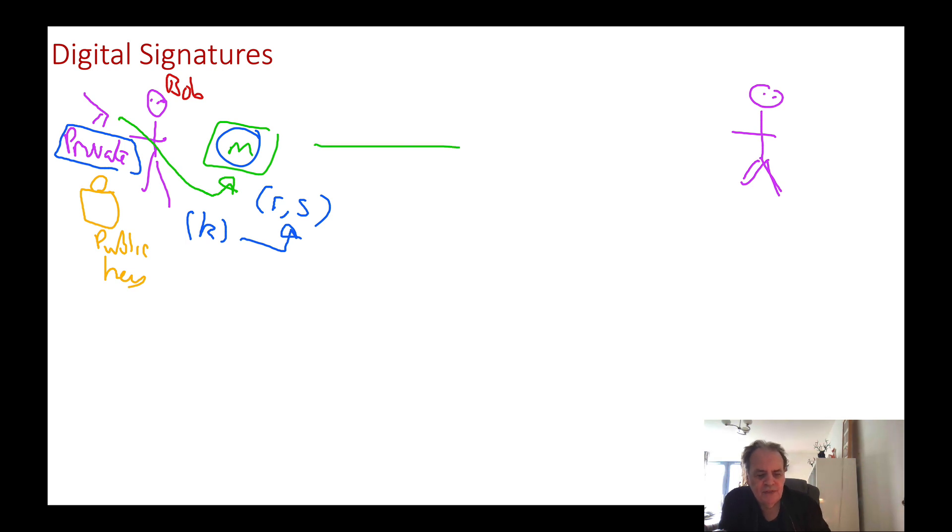Bob sends the message to Alice, along with the R and S values. She uses Bob's public key to check the message and signature. She takes a hash of the message, then takes Bob's public key and checks the R and S values. She doesn't need the nonce value K. All she needs is the R and S value, the public key from Bob, and the message. If things check out, everything is fine.